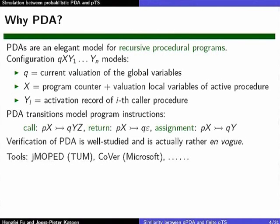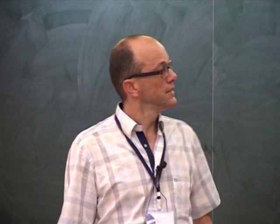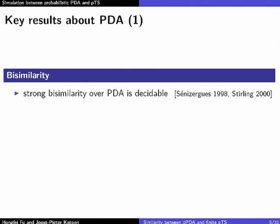Verification of pushdown automata is well studied and currently active — there was a paper this year at FASA about a Microsoft tool using Boolean programs and PDAs for recursive Boolean programs. Our interest is probabilistic pushdown automata: probabilistic programs with randomized assignments that must be simulated by a finite specification. Some results on simulation and bisimulation relations on PDAs are known to be decidable; Stirling's proof from 2000 uses techniques we partially adapt here.